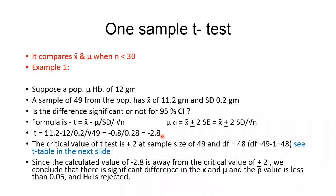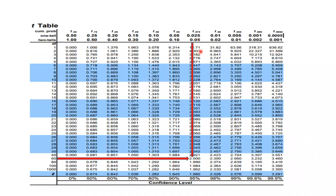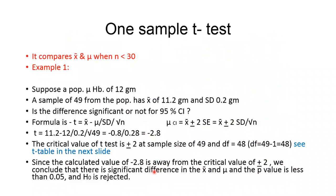The calculated test statistic is −2.8. The degree of freedom is n − 1 = 49 − 1 = 48. Looking at the t-table for 0.05 confidence level and degree of freedom 48 (using 60 as the nearest value), the critical value is 2.